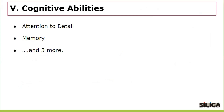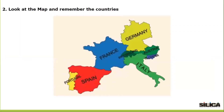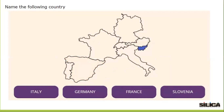Cognitive abilities can be summed up in about five sub-topics: attention to detail, memory, and three more. Cognitive ability is the mental capability that involves reasoning, planning, solving problems, thinking abstractly, comprehending complex ideas, learning quickly, and learning from experience. To test attention, you could be asked to spot a mistake in a given image — for example, an African jungle image featuring a silhouette of a kangaroo, which is the mistake as it is an Australian animal. For a memory test, you could be shown an image for a fraction of a second and later asked to identify parts of it, or shown a series of images and asked to arrange them in the order they were shown.